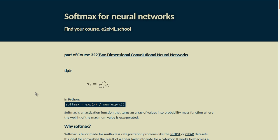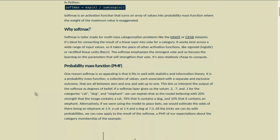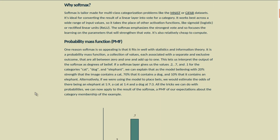It's ideal for converting the result of a linear layer into a vote for a category. It works best across a wide range of input values, so it takes the place of other activation functions like sigmoid, logistic, or rectified linear units. The Softmax emphasizes the strongest vote and focuses the learning on the parameters that will strengthen that vote. And as a bonus, it's relatively cheap to compute.